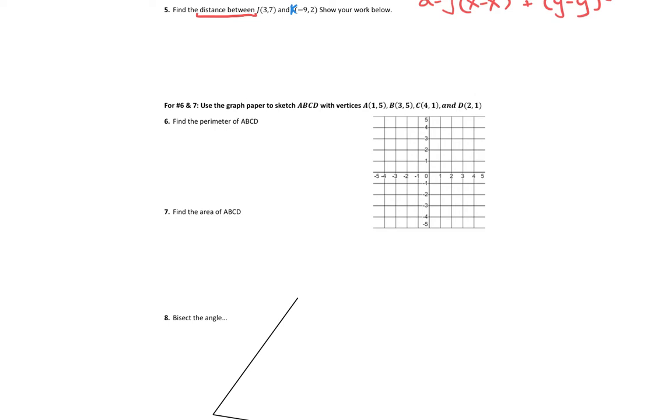So what I need to do before I get to work here is I need to label these as X's and Y's. So for point J, X is three and Y is seven. For point K, the X is negative nine and the Y is two. So we're going to label those suckers so we know where to plug them into our formula.